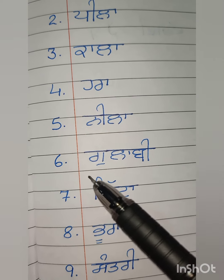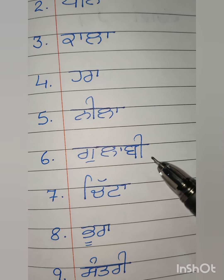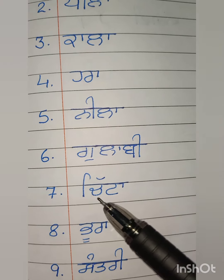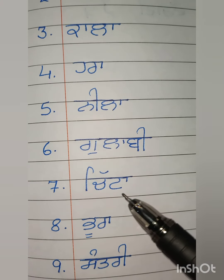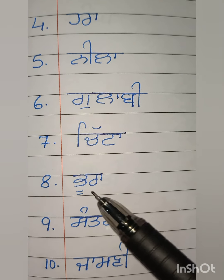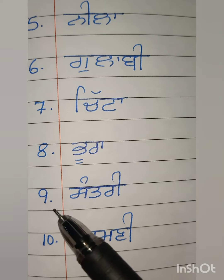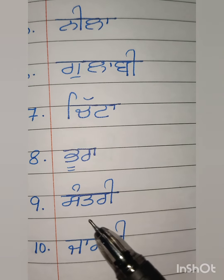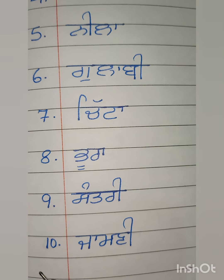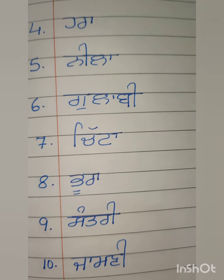Number 6: Gulaabi (Pink). Number 7: Chitta (White). Number 8: Pura (Brown). Number 9: Suntri (Orange). Number 10: Jamni (Purple).